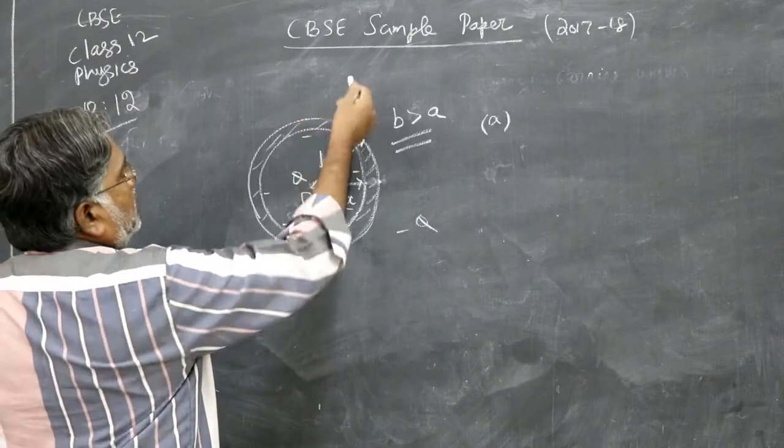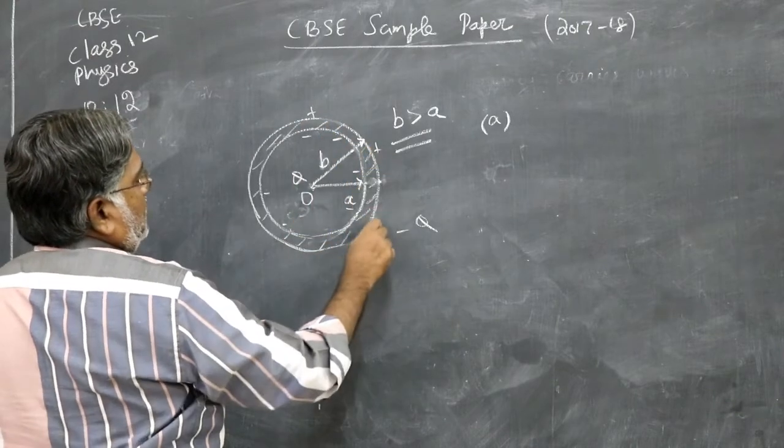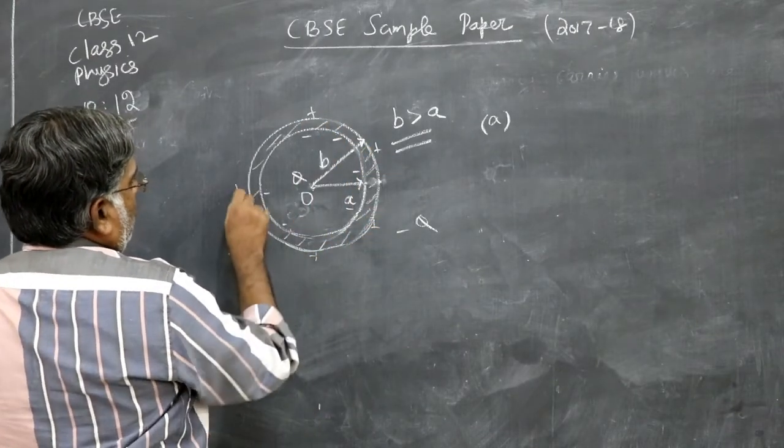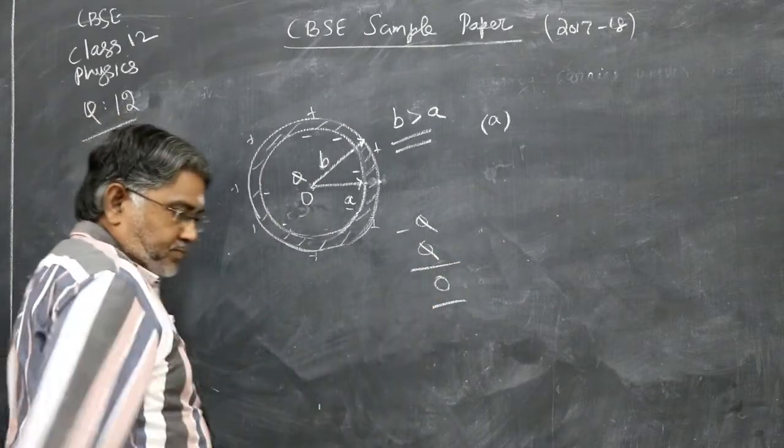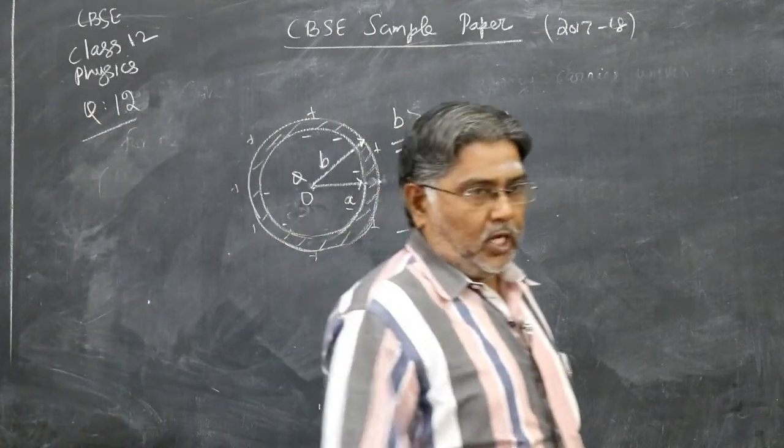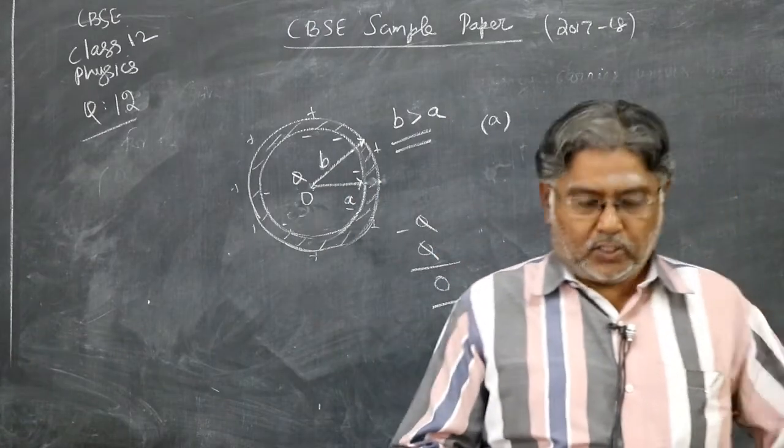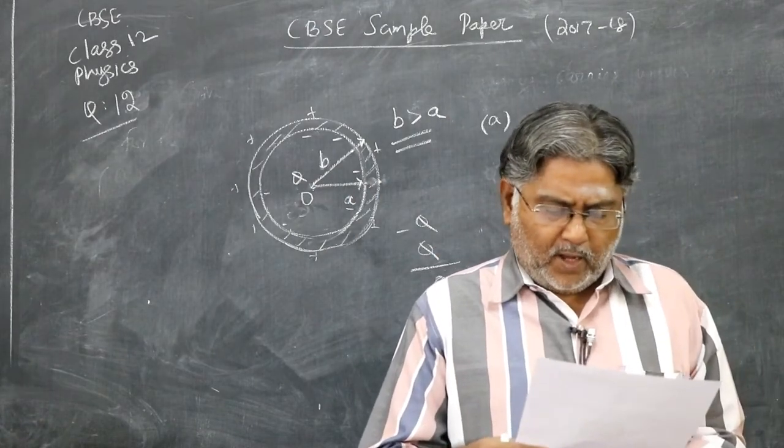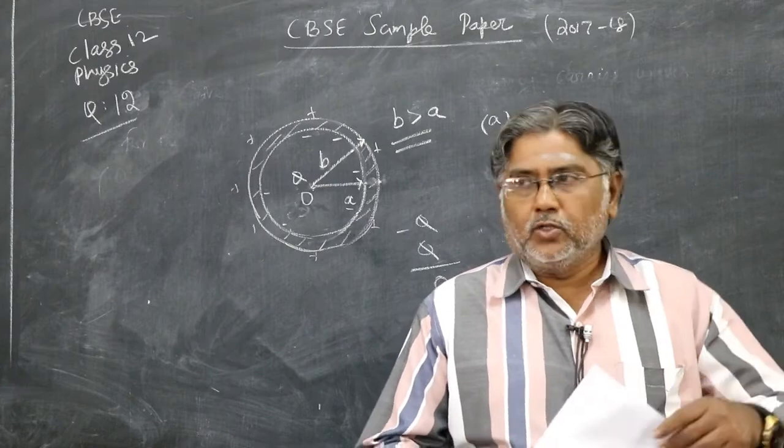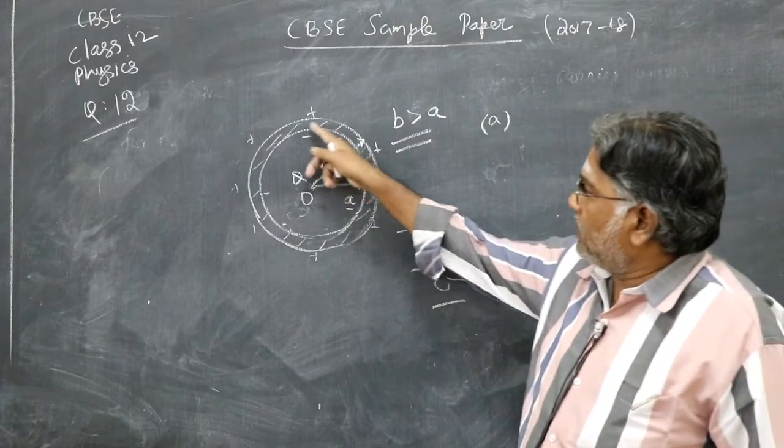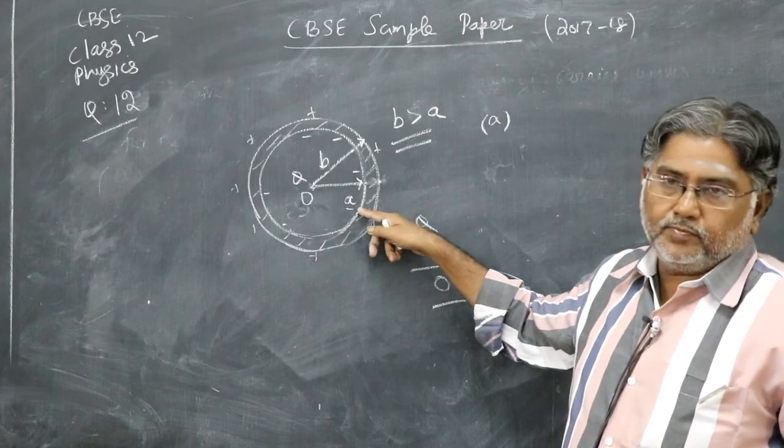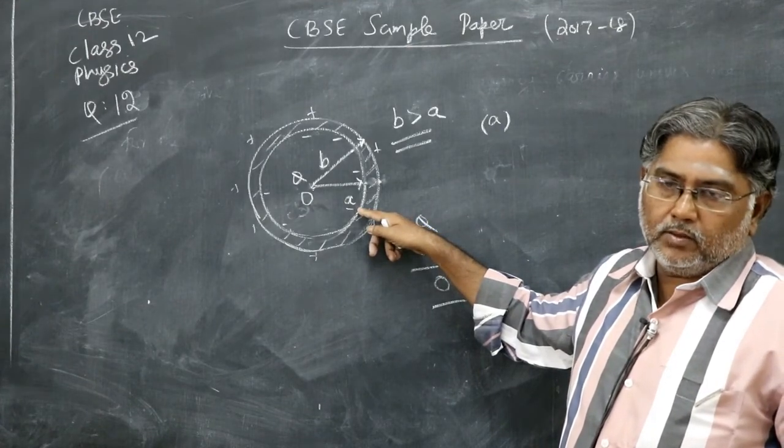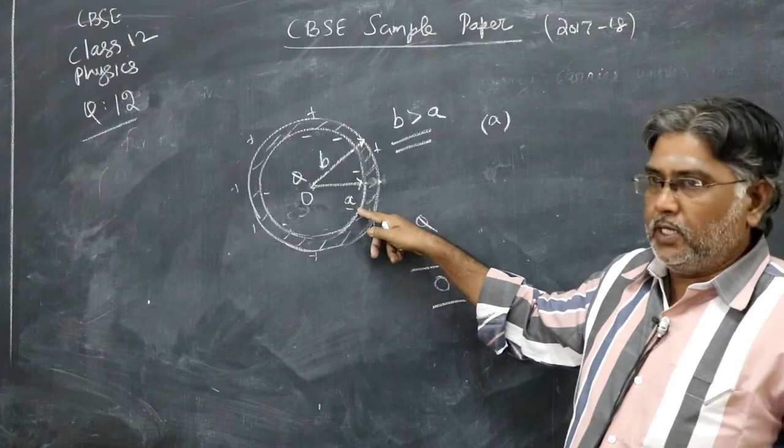Equivalently, charge on the outer spherical shell will be plus Q. So the total charge is zero. The total charge on the shell is zero because he says it is uncharged. Uncharged hollow spherical. So you will have to say out of the total charge which will add up to zero. It is neutral.